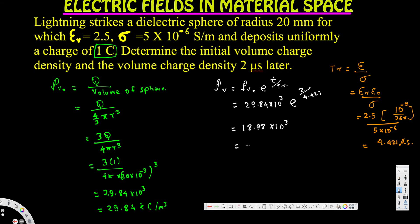So the volume charge density two microseconds later is 18.98 kilo coulombs per meter cubed. That's how we solve this kind of problem. Hope this helps — thanks for watching.